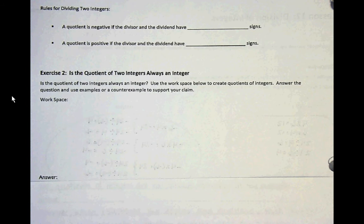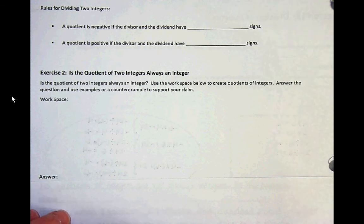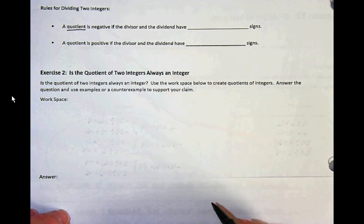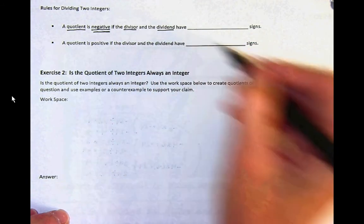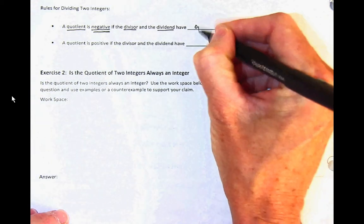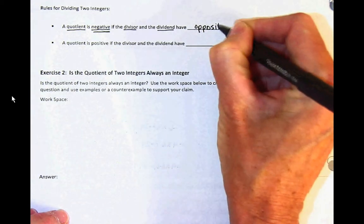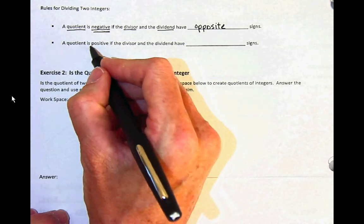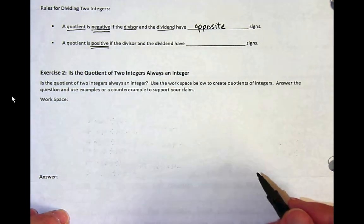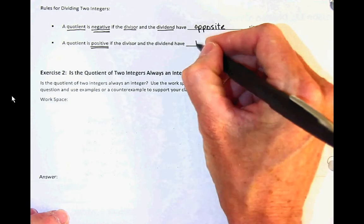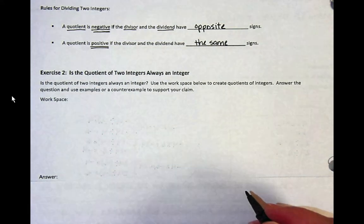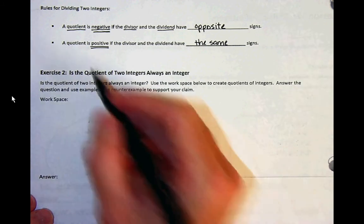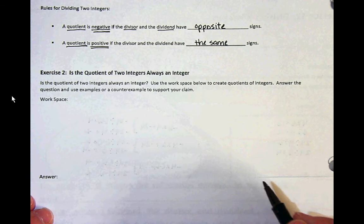Let's come up with rules for dividing two integers. The quotient is going to be negative if the divisor and the dividend have opposite signs. A quotient is positive if the dividend and divisor have the same signs. That's going to be important to remember, so you want to memorize this and be able to identify it. The quotient is the answer to a division problem.